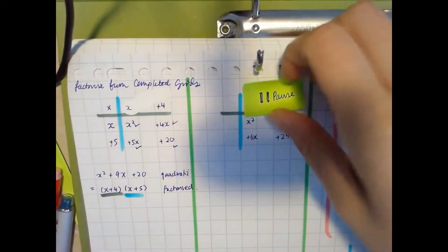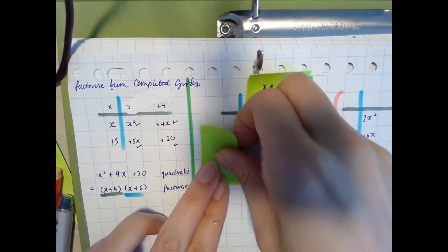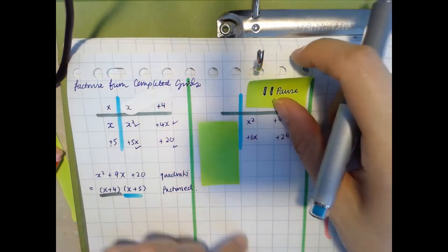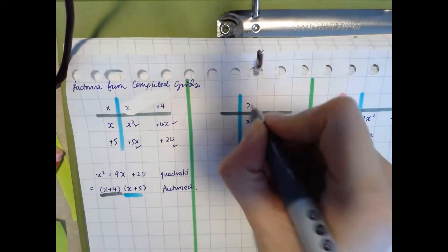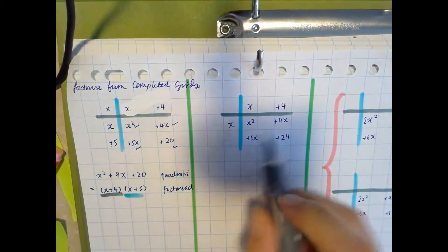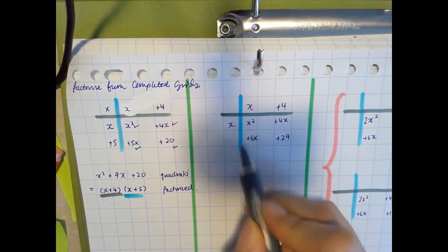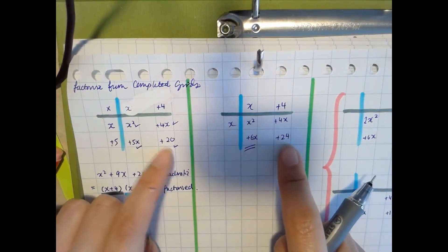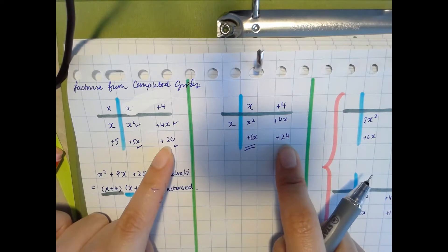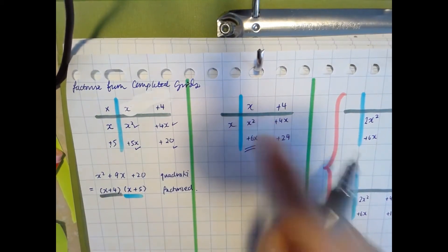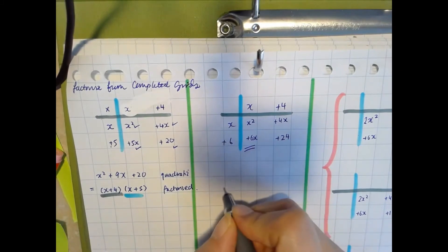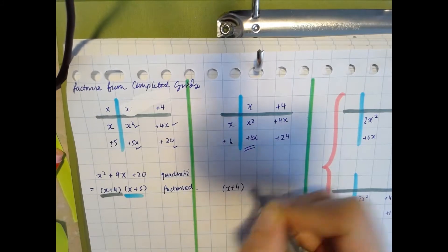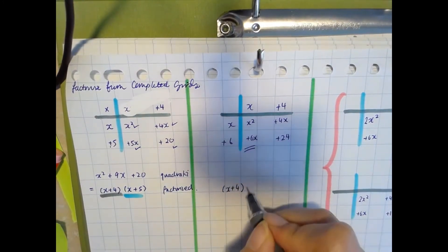Give this next one a go yourself, pausing the video and filling in the linear factors. You should have the same setup here to get your positive 4x. The only term that has changed is from positive 5 to positive 6, and that's affected our positive 20 going to positive 24. But back to our linear factors: this x must be multiplied by positive 6. Your linear factors are (x + 4)(x + 6). That's your polynomial factorised.